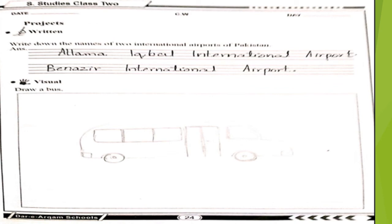On workbook page number 24 there are projects. The first one is a written project: write down the names of two international airports of Pakistan. The first Pakistani international airport is Allama Iqbal International Airport, and the second one is Benazir International Airport. Your visual project is to draw a bus and color it.